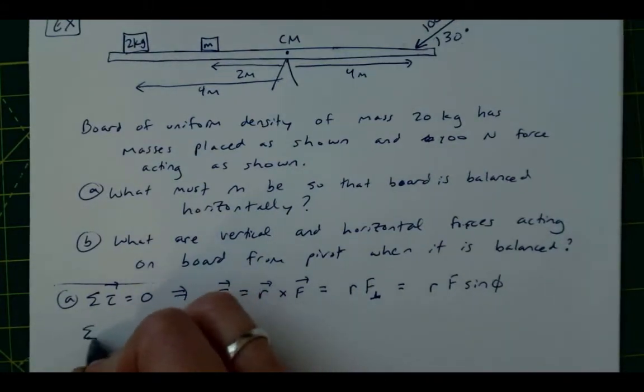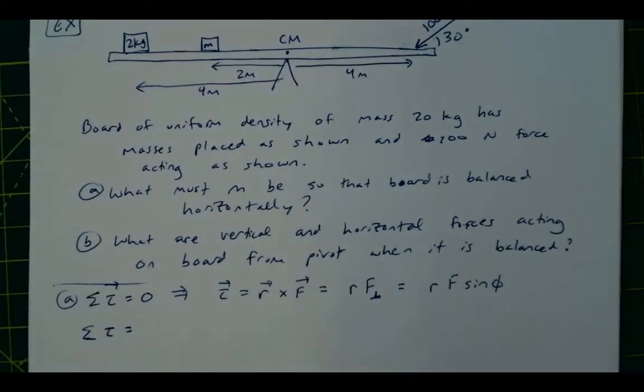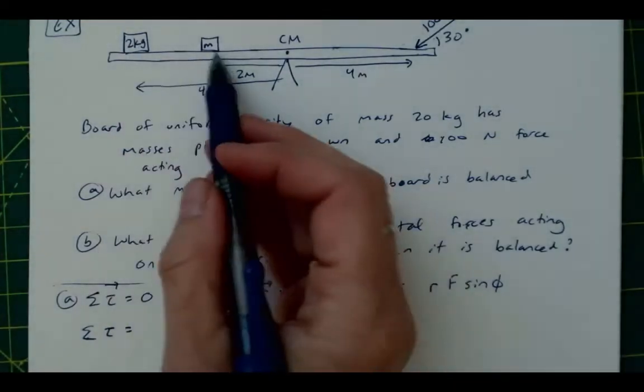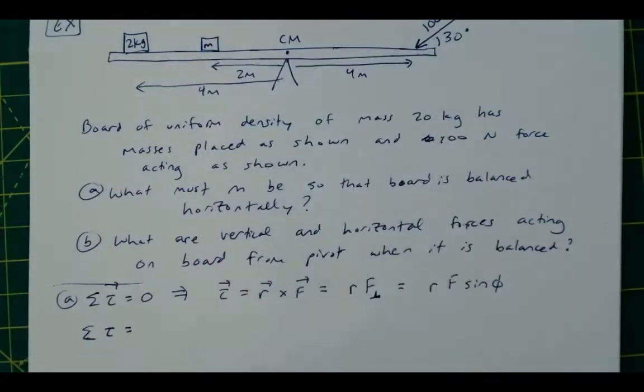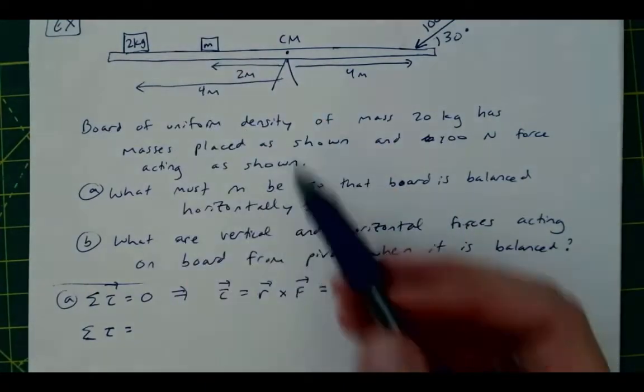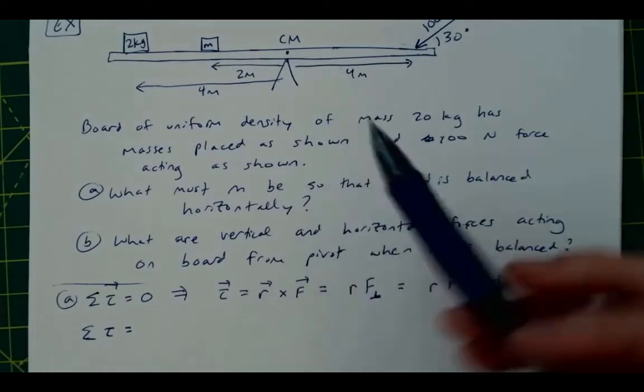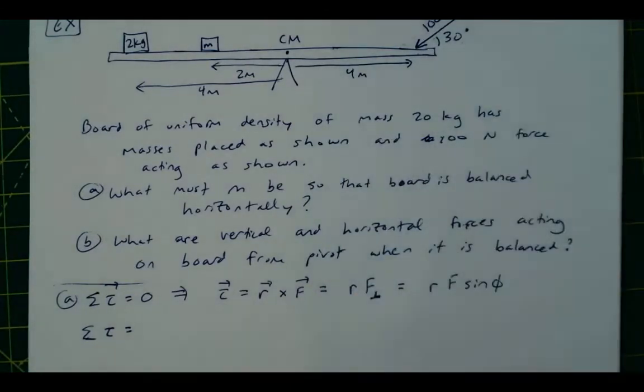So that's equal to then R times F times the sine of the angle between them. In this case, you are given the angle between them, and you can see the sine of 30 does indeed give the perpendicular component, but you need to be the one to verify that for every problem. Okay,